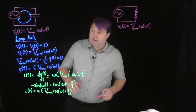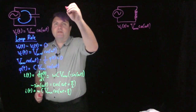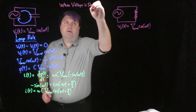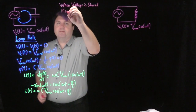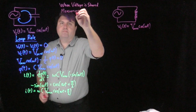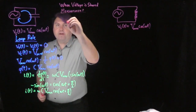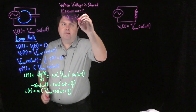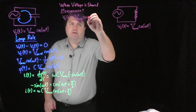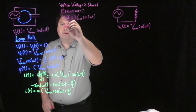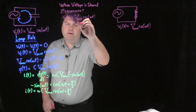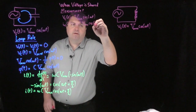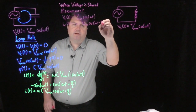Let's bring this all together in one place. When voltage is the shared measurement, we have the voltage of a capacitor as a function of time equal to V_max·cos(ωt), and the current over the capacitor as a function of time is ω times C times V_max·cos(ωt + π/2).